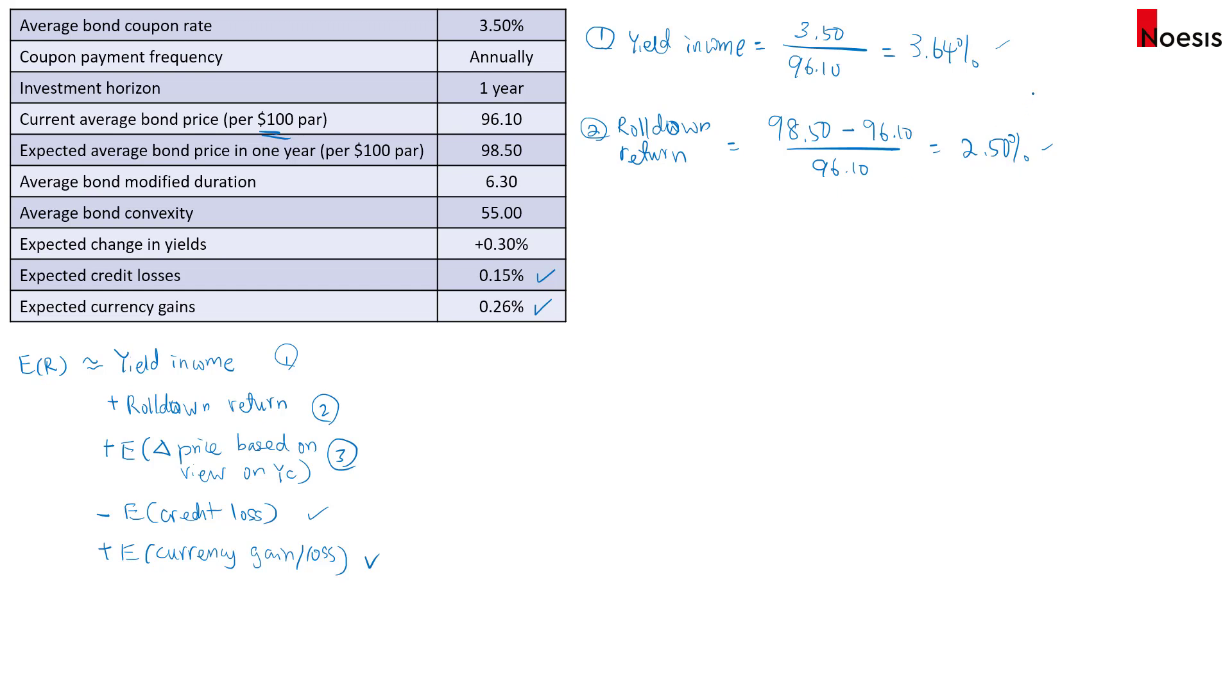So if you are looking for rolling yield, just add up these two. So that gives you the rolling yield. So that is 3.64% plus 2.5%. So that gives us 6.14%.